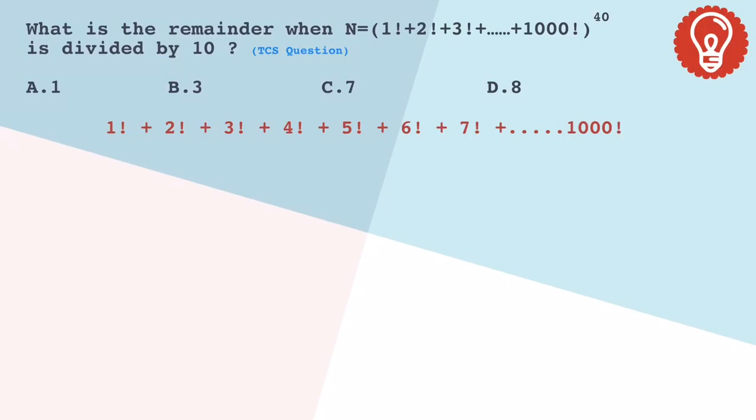In this, let's focus on 5 factorial which is 120, 6 factorial is 720, and 7 factorial is 5040 and so on.